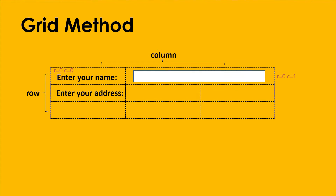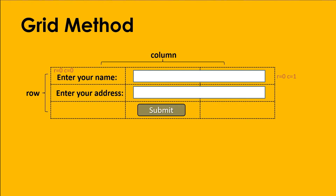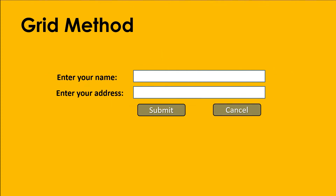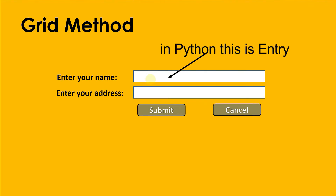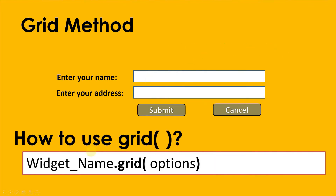We also have another label 'Enter Your Address', another text entry, a submit button, and a cancel button. For this video we're only going to design the GUI - we're not going to add commands for each button. We'll have a label, two text boxes, and two buttons. Note that in Python, the text box widget is called an entry.